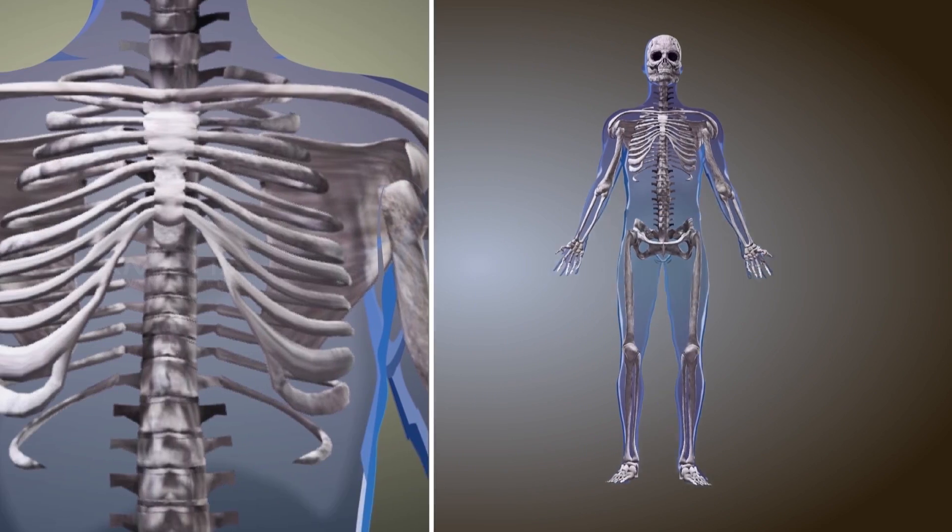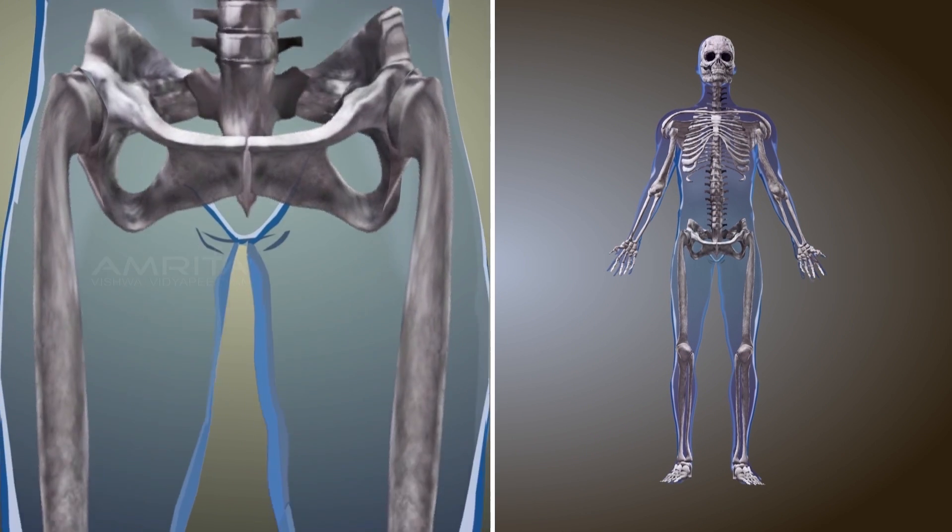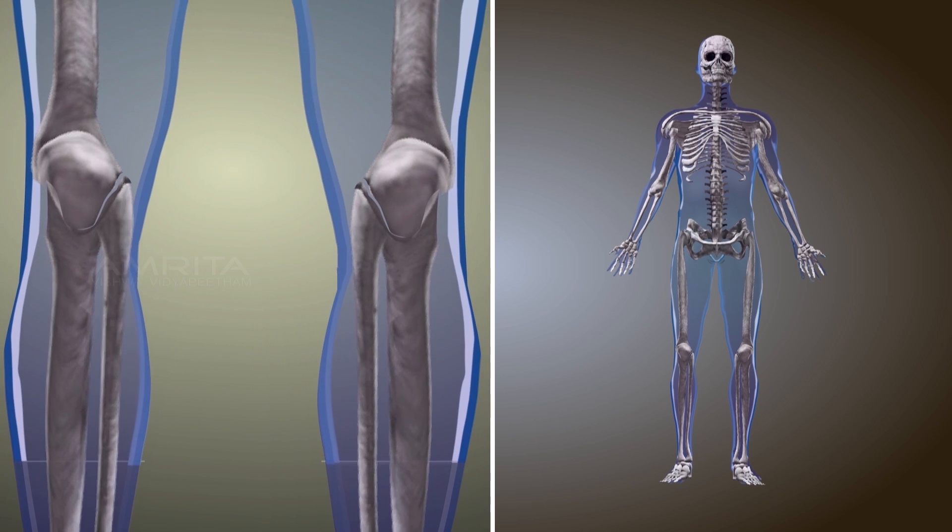Bone cells secrete calcium that hardens the bone and supports the main organs of the body. Bone cells are solid.